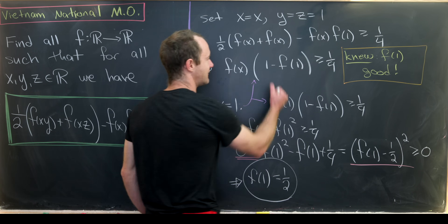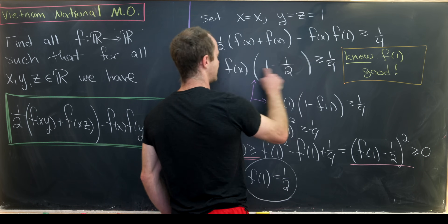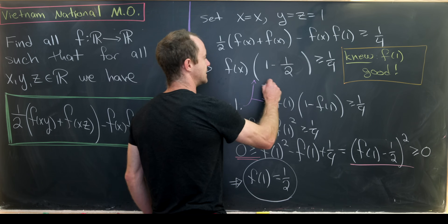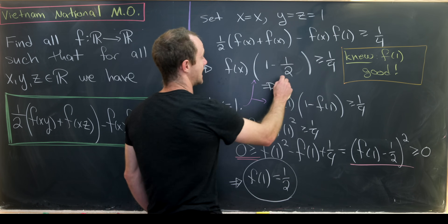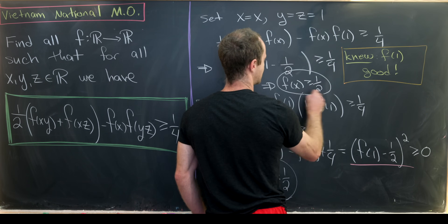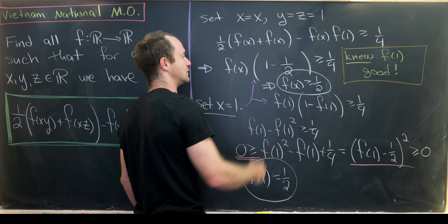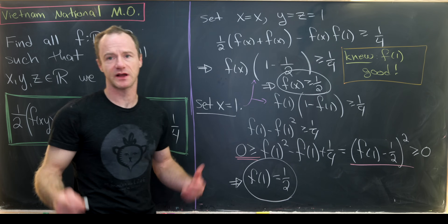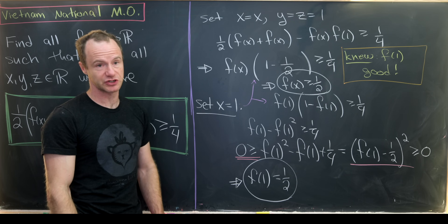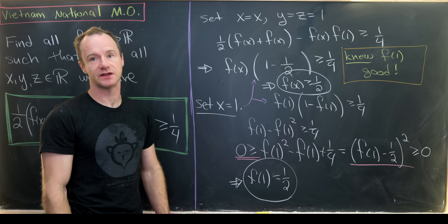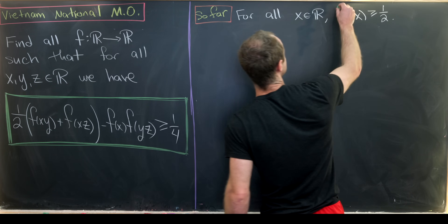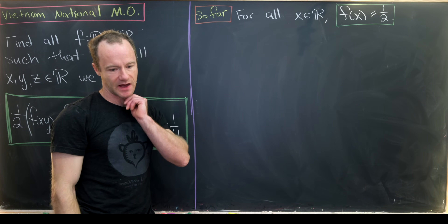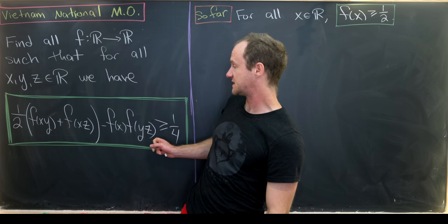Bringing f(1) = 1/2 back into our inequality, we have f(x)·(1 − 1/2) ≥ 1/4, which gives f(x)·(1/2) ≥ 1/4. Moving things around, we get f(x) ≥ 1/2 for all real x.